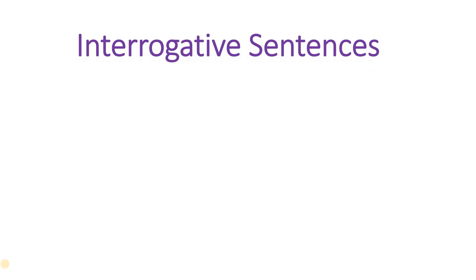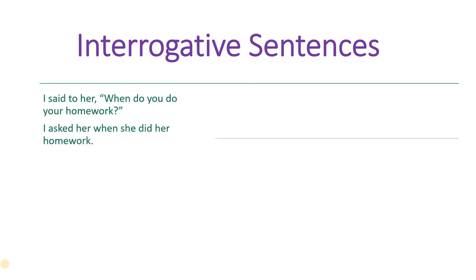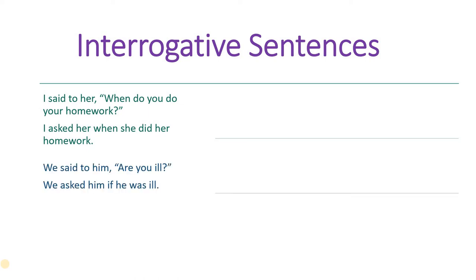Next: interrogative sentence. I said to her, 'When do you do your homework?' — I asked her when she did her homework. We said to him, 'Are you ill?' — We asked him if he was ill. She says, 'Who is he?' — She says who he is. Now see the change: the question form is changed into a statement — very important in interrogative sentences when we are changing direct speech to indirect speech. The question form will change to the statement form.